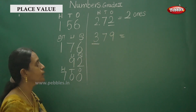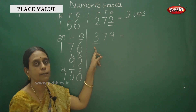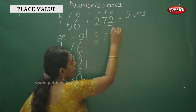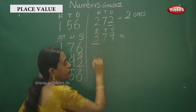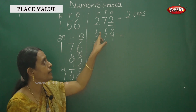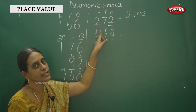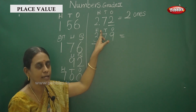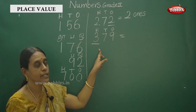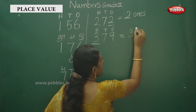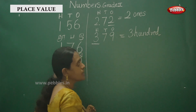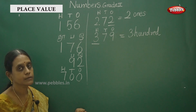Find the place value of the underlined digit. The underlined digit is 3. Write the same way: ones, tens, and hundreds. H stands for hundreds — hundreds is the answer. Three ones, tens, and hundreds. So the place value is three hundred.